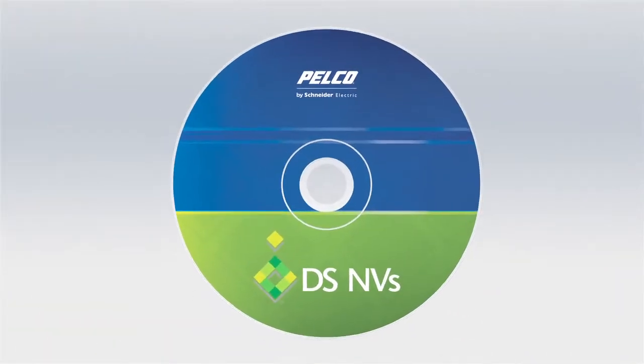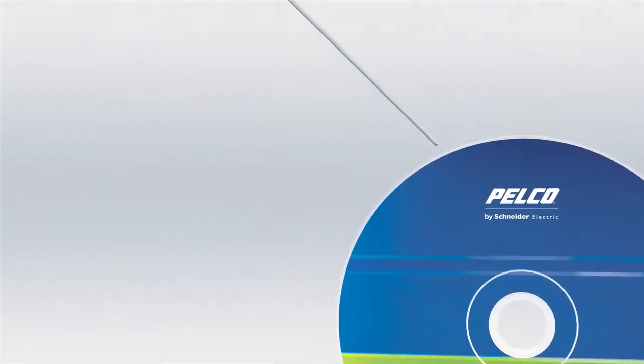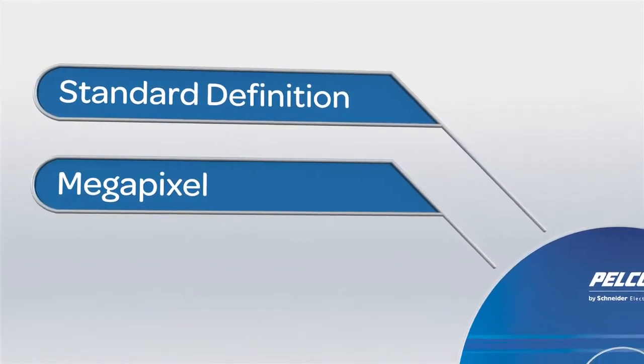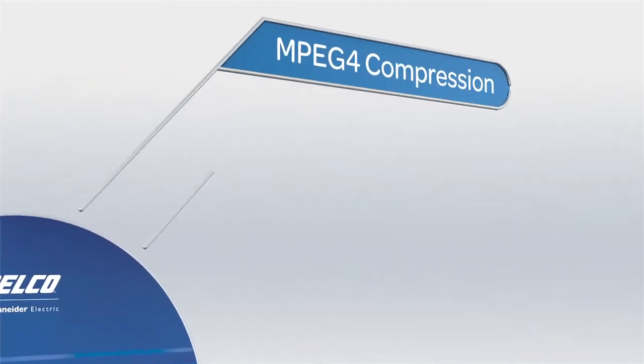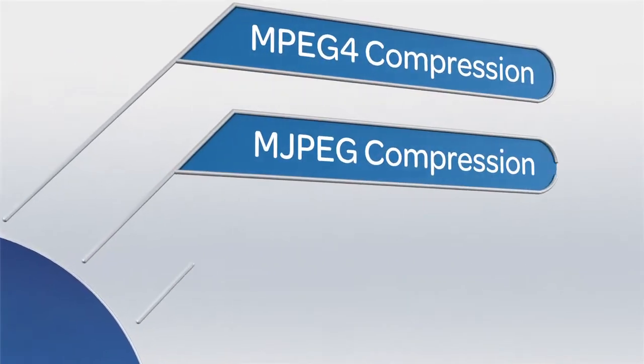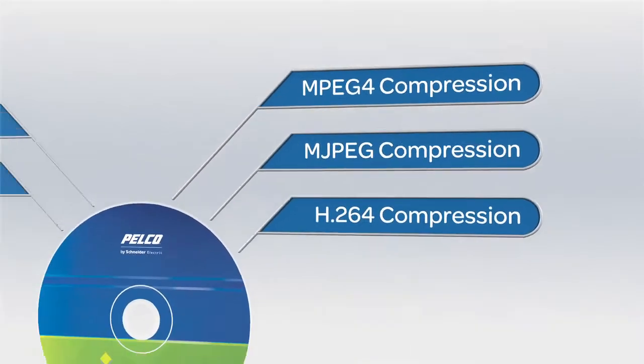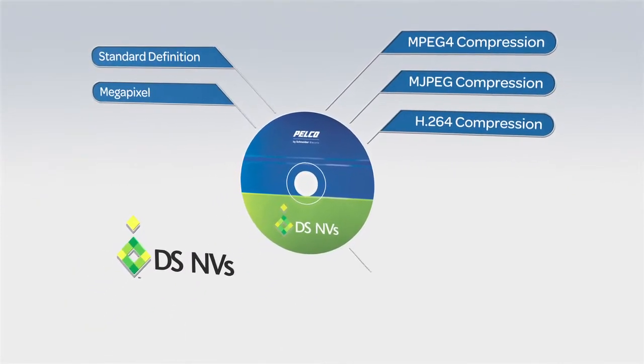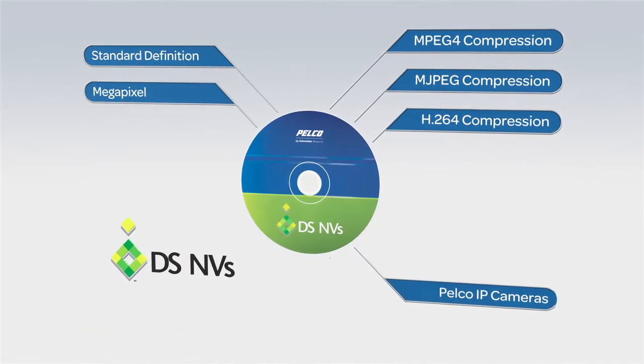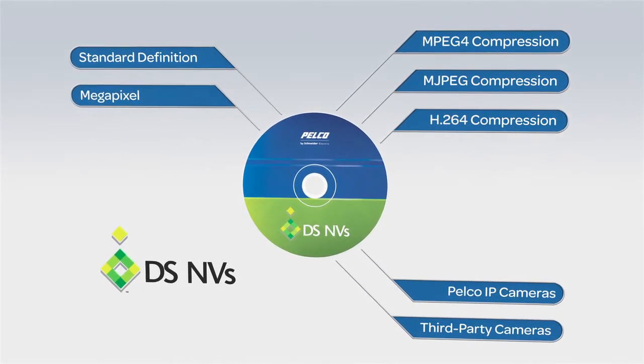DSNVS is truly flexible, with support for standard definition and megapixel recording with MPEG-4, motion JPEG, or H.264 compression. And it's capable of recording and displaying high-quality video captured by Pelco and third-party IP cameras. I'm going to show you how easy it is to take advantage of the free DSNVS software and set up a four-camera system.